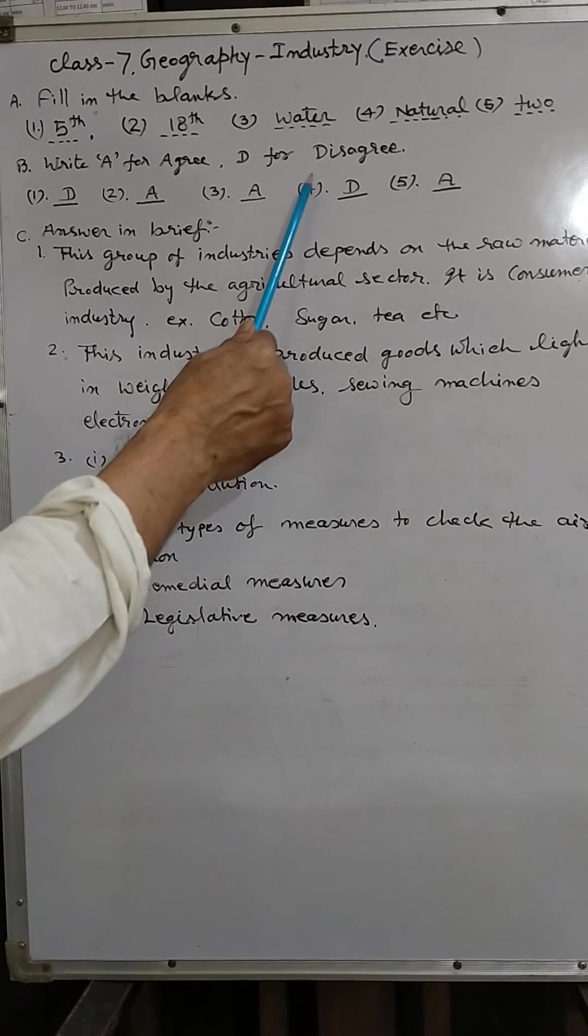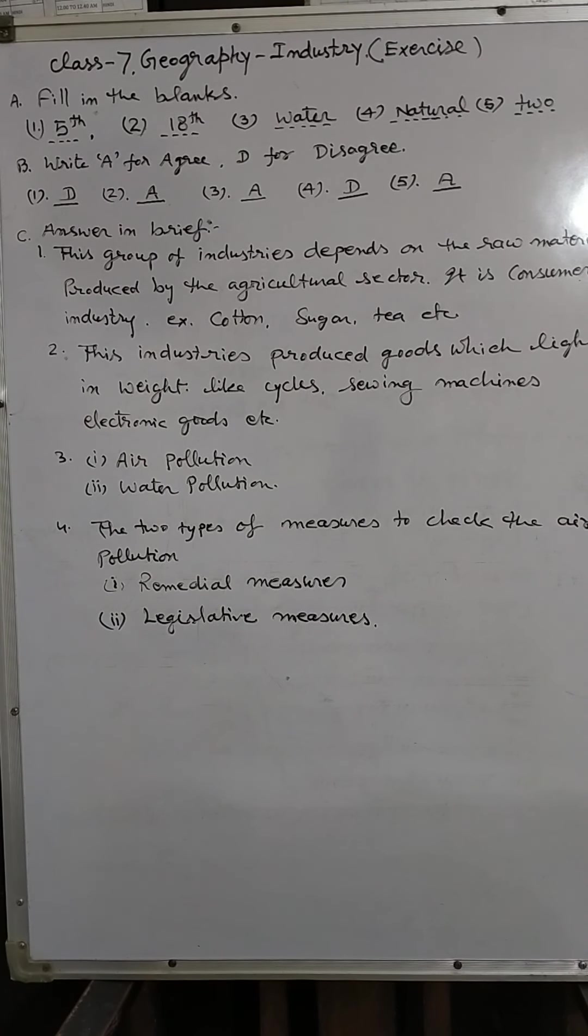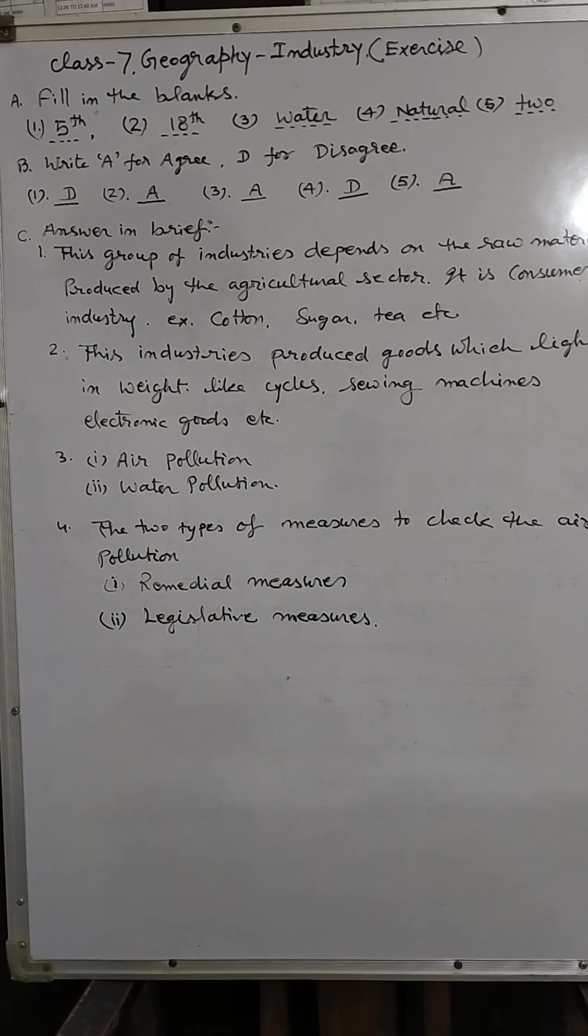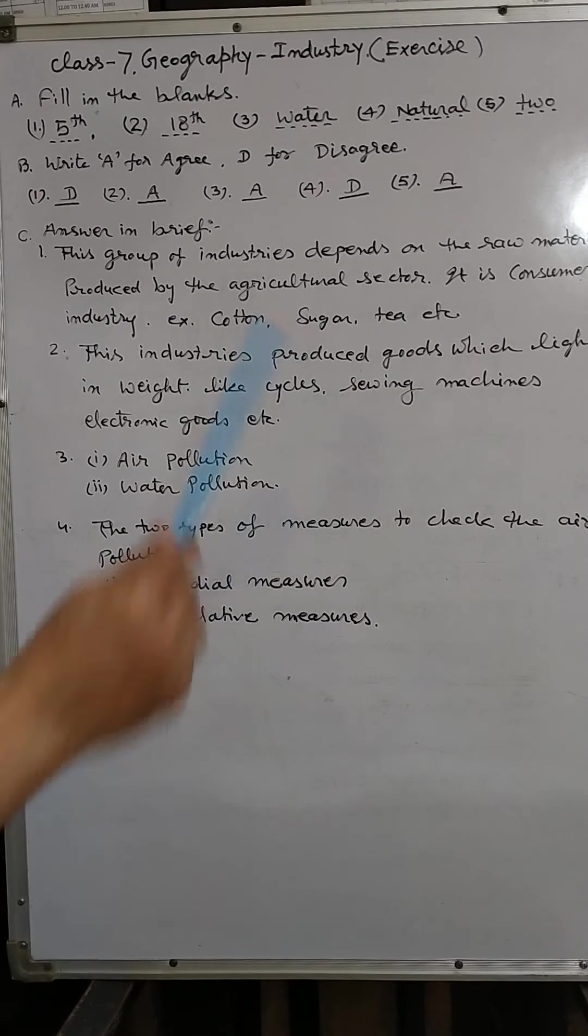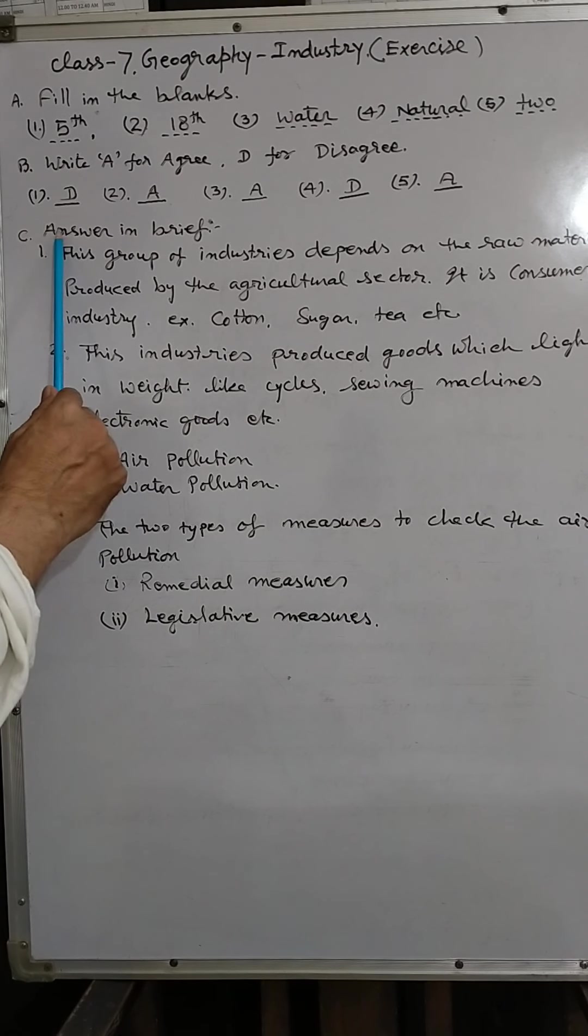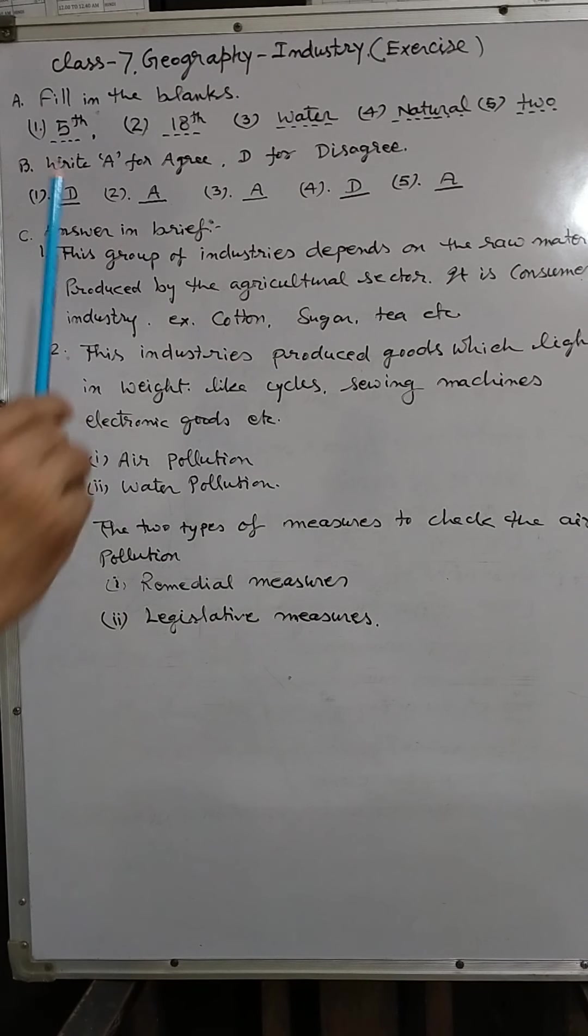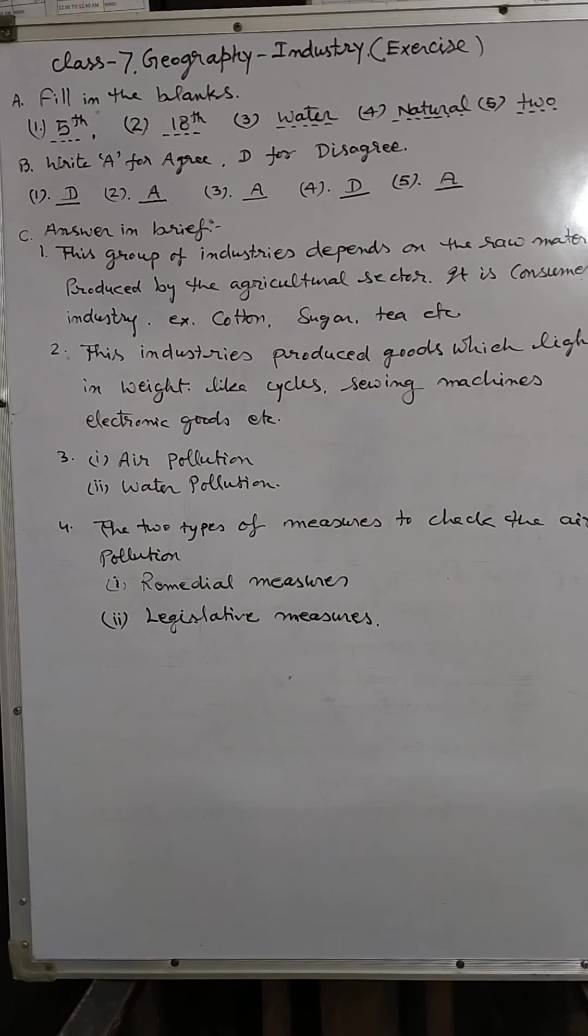First sentence in the exercise: A country can survive only on agriculture. So this is disagree. A country cannot survive on agriculture alone. So this is disagree.